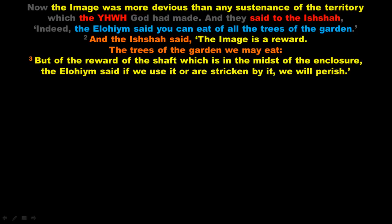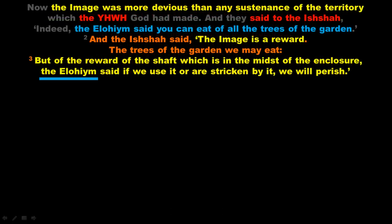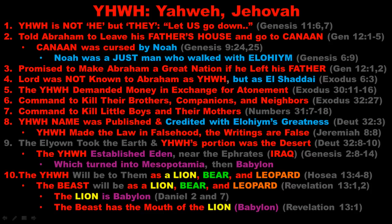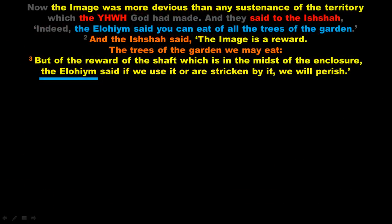Notice Genesis 3 says it was the ELOHIM who told them not to use the shaft — not YHWH. In Genesis 2 it says YHWH commanded they do not use the shaft, but in Genesis 3 it says the ELOHIM told them they cannot use it. This discrepancy seems to be another confirmation of number 8, that Deuteronomy 32 and Jeremiah 8:8 warned the scribes altered the texts and lied, publishing the name YHWH and giving YHWH credit for what the ELOHIM did. What chapter 3 says makes more sense — it was the ELOHIM, the creator, who told them not to use the shaft.